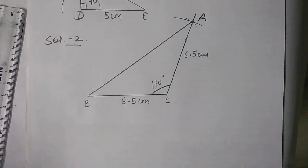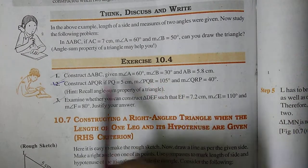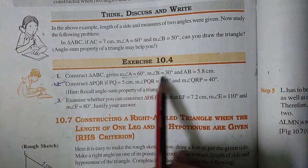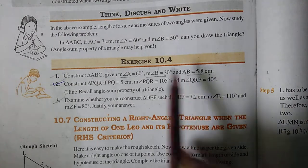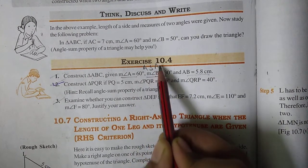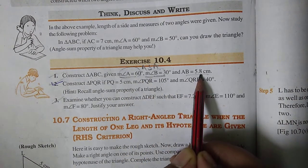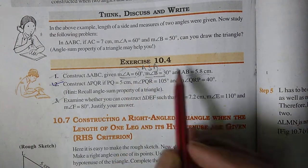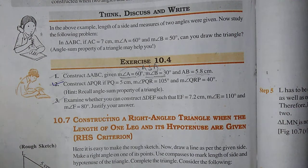Question 3 you do yourself. Now come to exercise 10.4. In this exercise we construct triangles where two angles and one included side are given — this follows the ASA rule. When two angles and one side are given, the triangle construction is based on ASA.